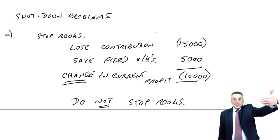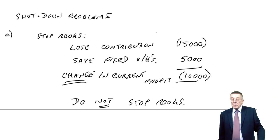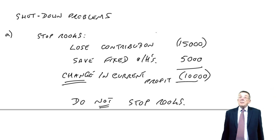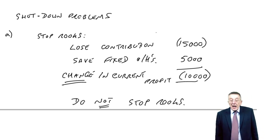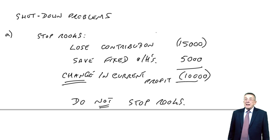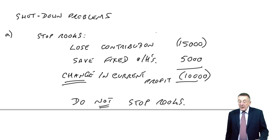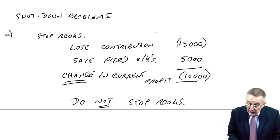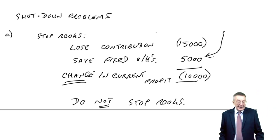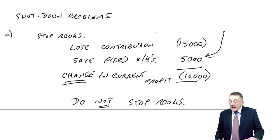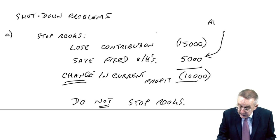Currently the profit is plus 5,000. If we do stop rooks, it'll be minus 5,000. I can use this to deal with some terminology from the previous page: those fixed costs of 5,000 — the saving we make by stopping rooks — are what we call avoidable fixed costs.